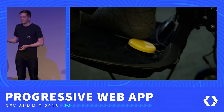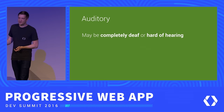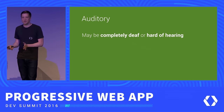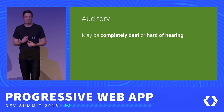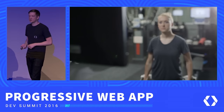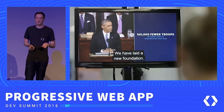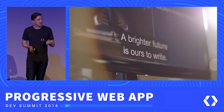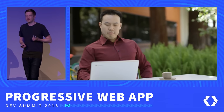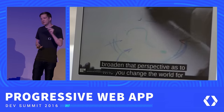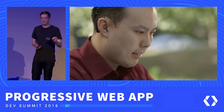For auditory impairment, these users range from those who are profoundly deaf to someone who is hard of hearing. I'm actually in the hard of hearing camp — I've got about 90% hearing loss on my left-hand side. For these users, you want to make sure you're not relying solely on sound to convey information in your app — make sure that if you have a video, you've got captions and transcripts, providing some alternative if sound is part of your interface.